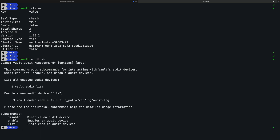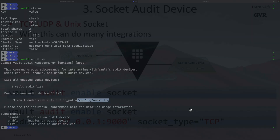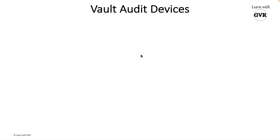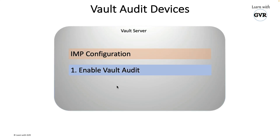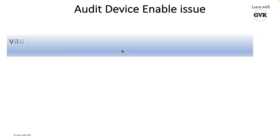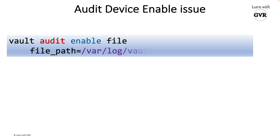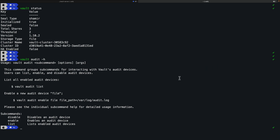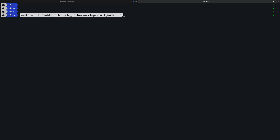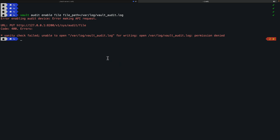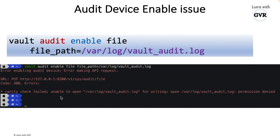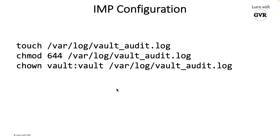Now for the demo. The steps are: enable vault audit and enable to file, then test it. There's one important configuration to address first: the audit enable device permission issue. When running 'vault audit enable file' with a file path like '/var/log/vault-audit.log', you'll get a permission error. You'll get this same error if the vault user doesn't have write access to that folder.